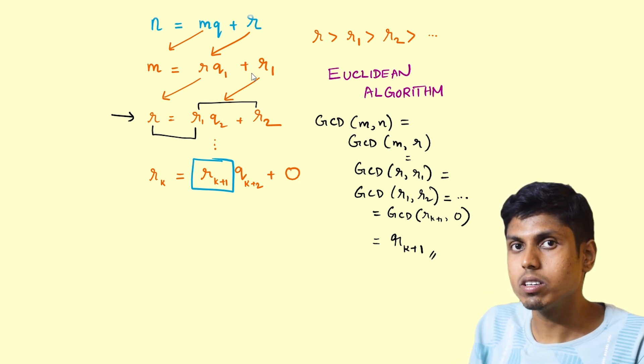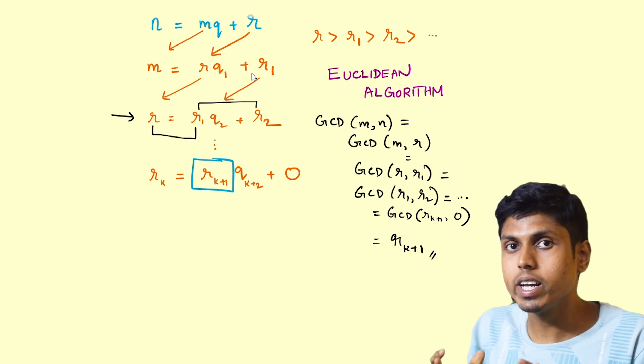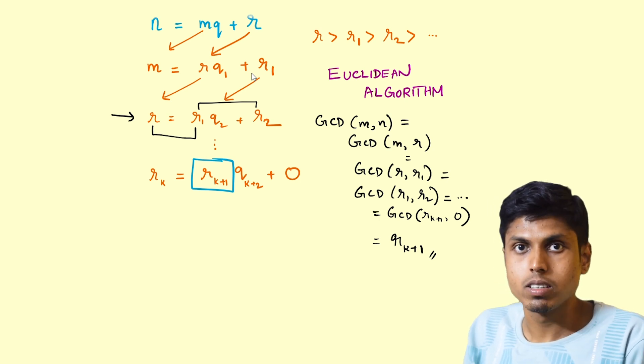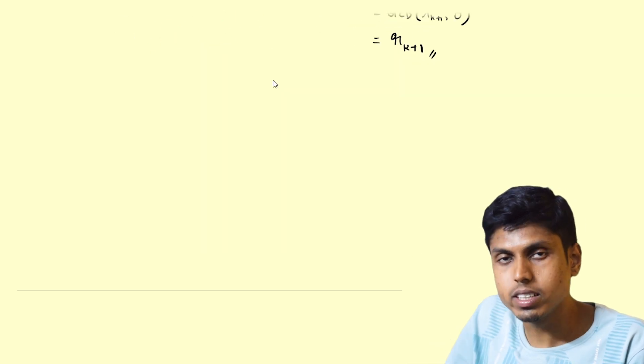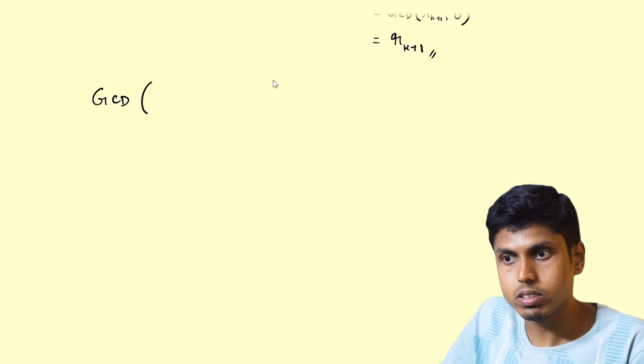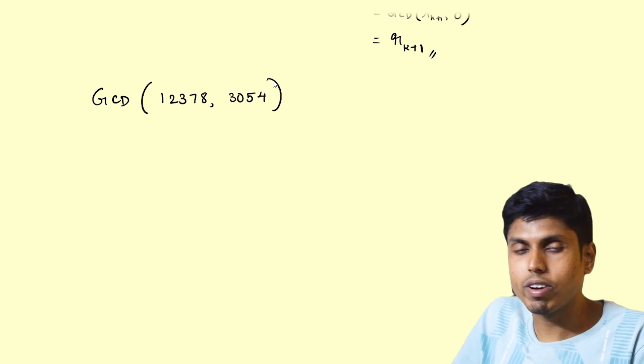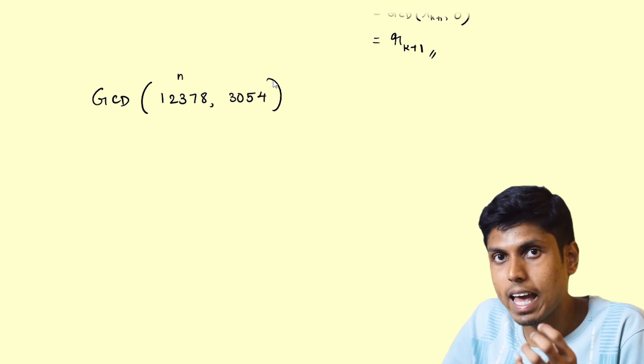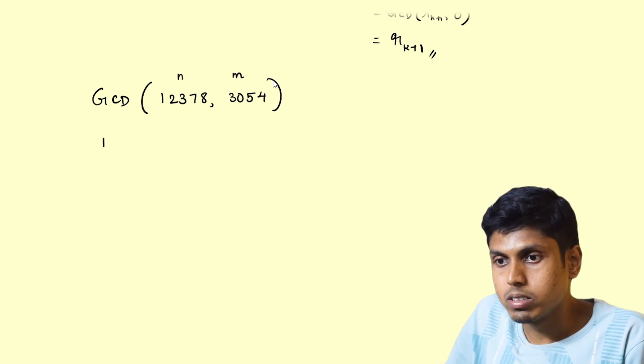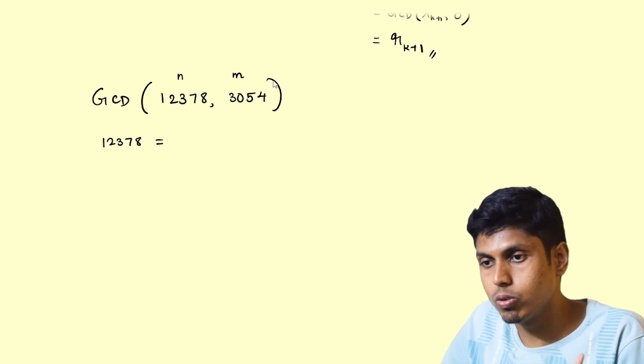So we always recommend you to take an example to understand this and to consolidate your comprehension of this problem. So let's do one quick example to justify this. Consider the GCD of numbers 12378 comma 3054. So in order to find this, I perform the Euclidean algorithm considering this number as n and this number as m.